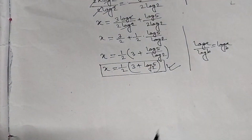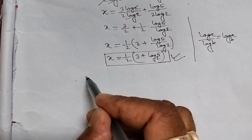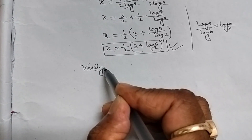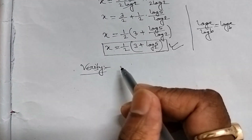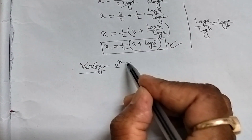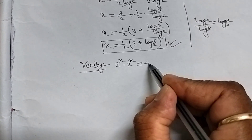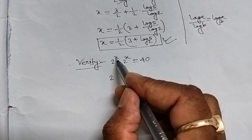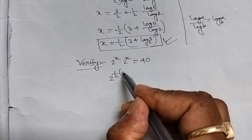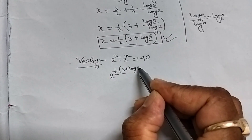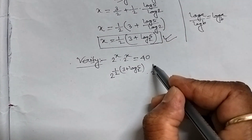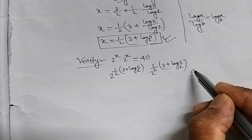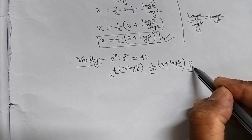Now we will have to verify this value of x, whether it is correct or not. We write the given equation: 2 power x times 2 power x equal to 40. Now we will have to put the value of x. Therefore, 2 power 1 upon 2 into 3 plus log 5 base 2, times 2 power 1 upon 2 into 3 plus log 5 base 2, equal to question mark 40.